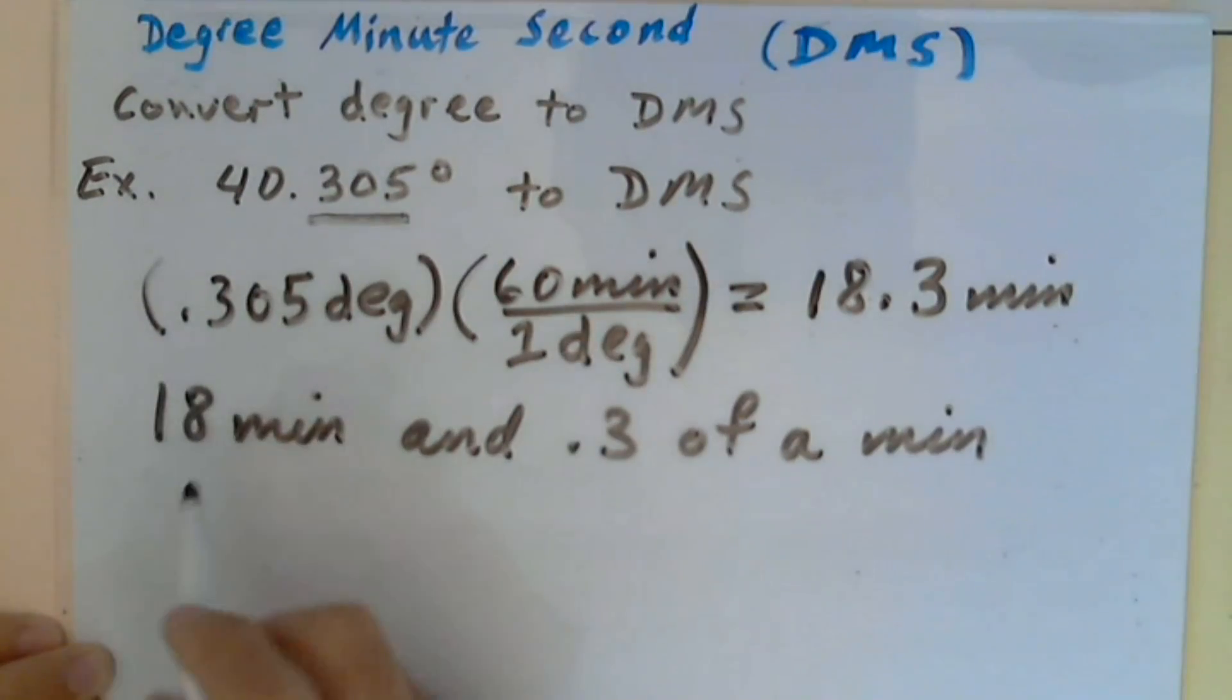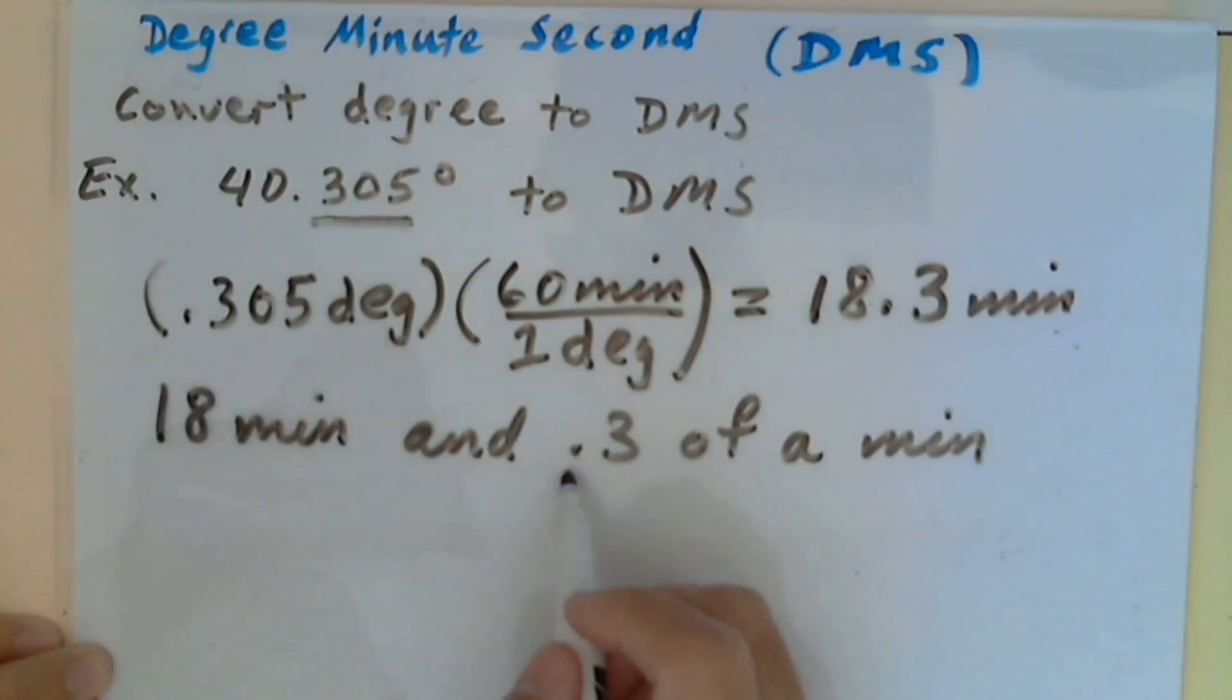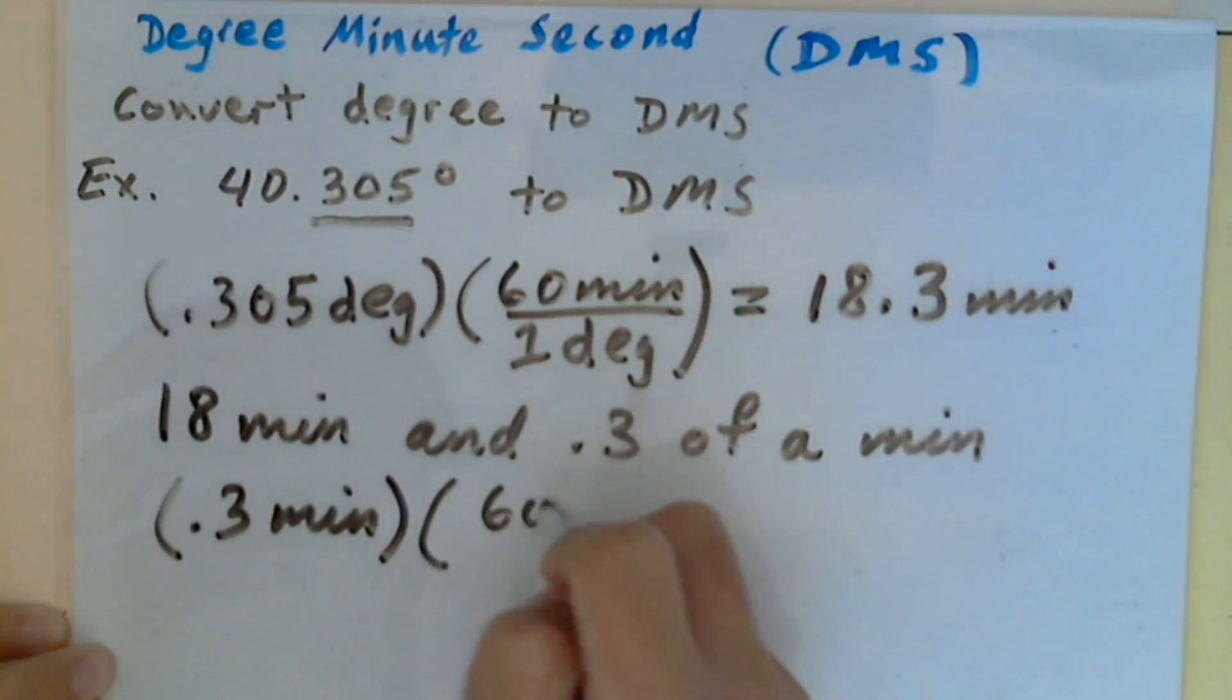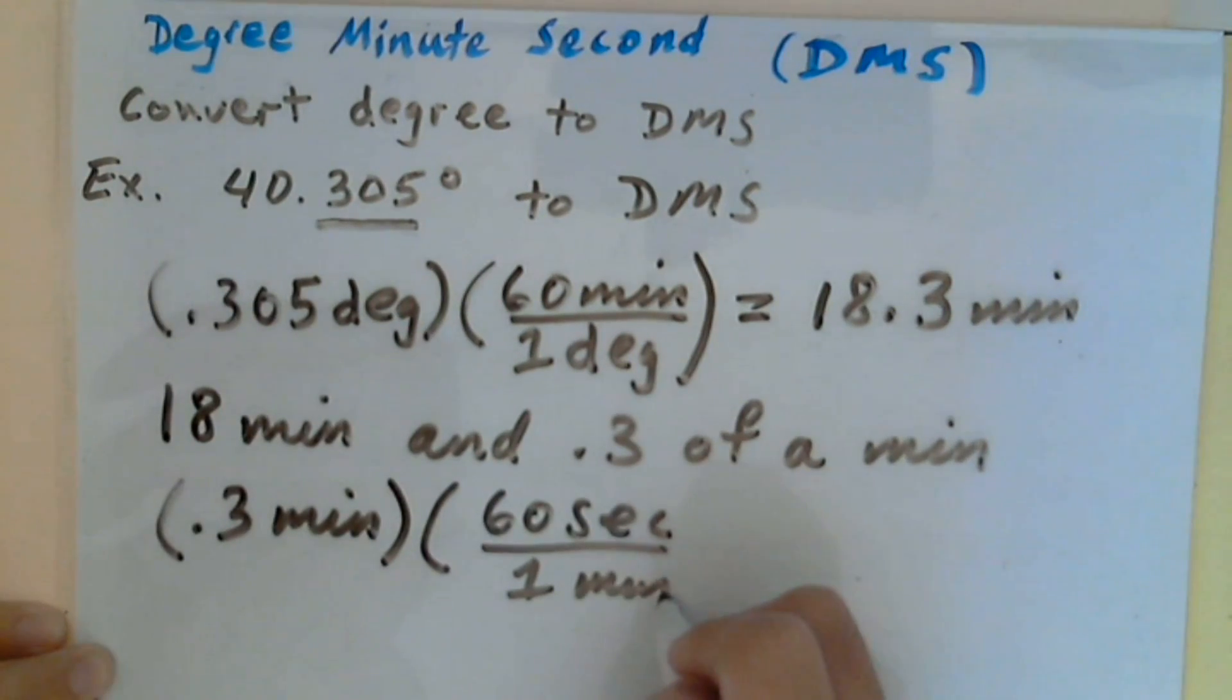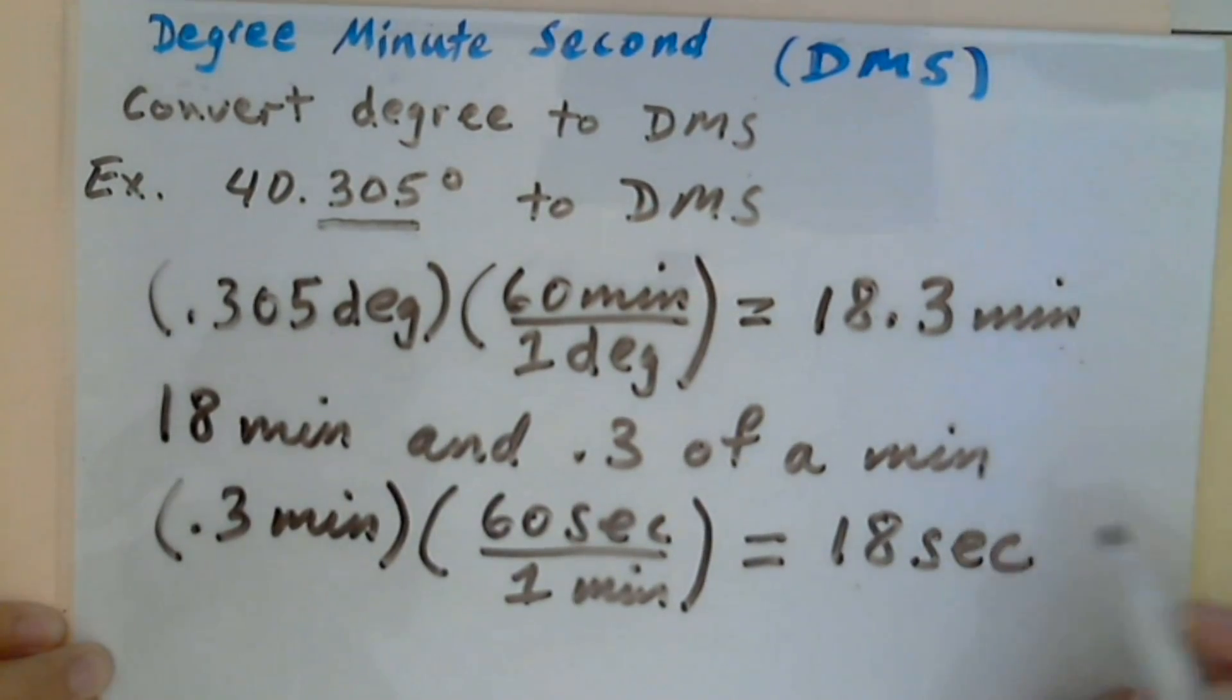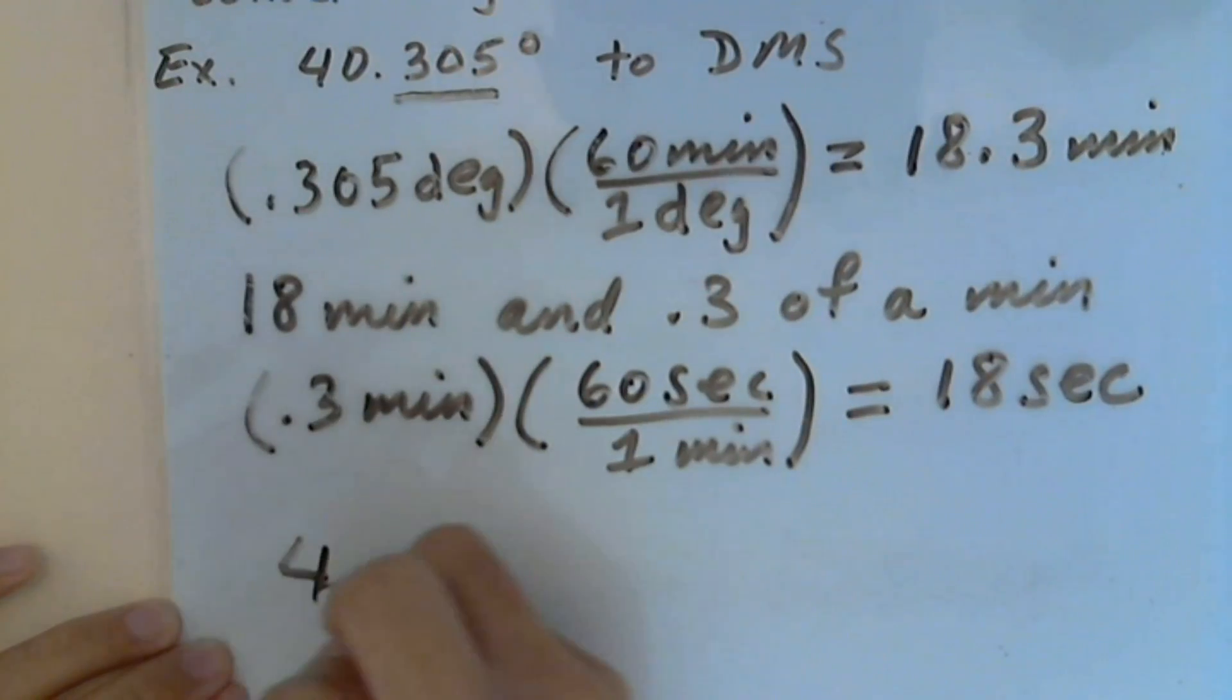I have 18 minutes. Now I need to find the seconds. I will convert 0.3 of a minute to seconds. There are 60 seconds in one minute. Minute and minute cancel out. I get 18 seconds.